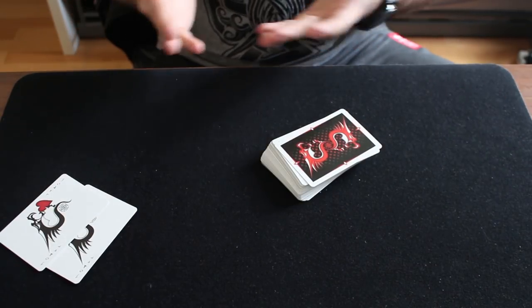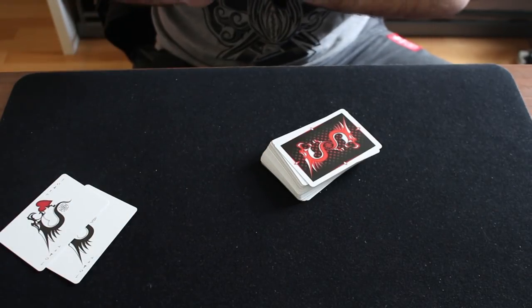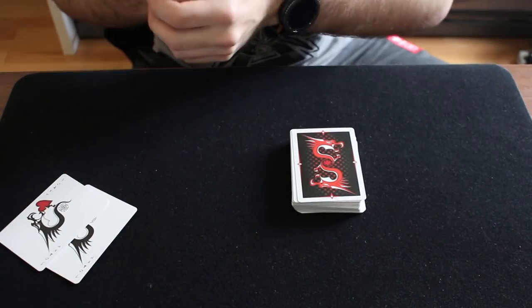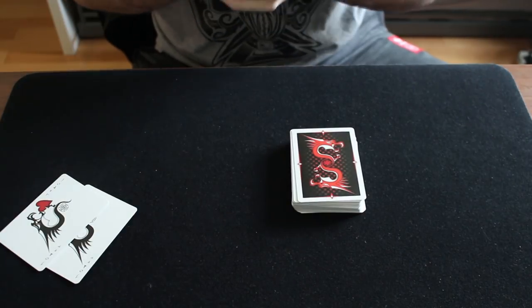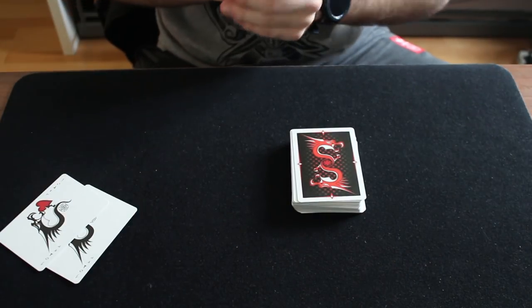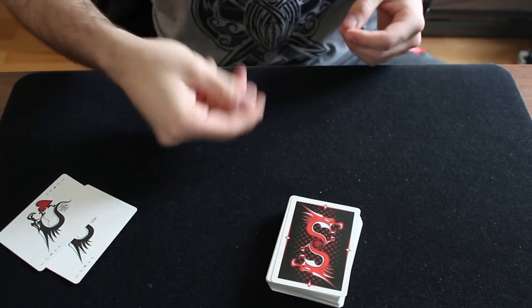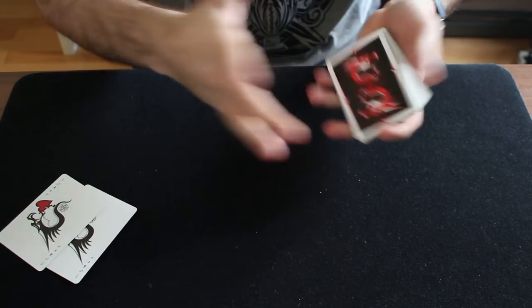Now you start off by introducing the 2 jokers. They will help you out, but they will stay on the table for now. Now you need 2 spectators. You can also do it with a single spectator, it's best to do with 2.